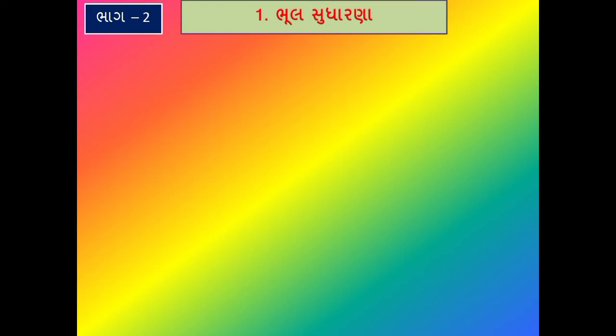ભૂલ સુધારણા શું છે તે સમજીએ. કાચું સરવૈયું તૈયાર કરો તો બંને બાજુના સરવાળા સમાન હોવા છતાં, આમનોંધ તૈયાર કરવામાં કે ખાતાવહીની બાકી કાઢવામાં કોઈ ગાણિતિક ભૂલ થઈ હોય તેવું બની શકે છે. કાચા સરવૈયાનો ઉધાર અને જમા બાજુનો સરવાળો મળી જાય તો ગાણિતિક રીતે કાચું સરવૈયું સાચું છે તેવું માની લેવામાં આવે છે.